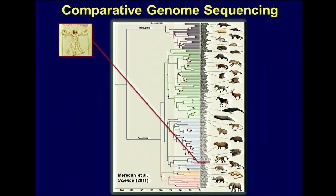A prominent genome researcher, Eric Lander, made the comment that for the past three and a half billion years, evolution has been taking notes — and all those notes were scripted in the genome sequences of other species. The idea came to the fore that we could understand the human genome sequence better if we could compare it to other genomes and figure out what has and has not changed. Humans are just a small twig on this complicated phylogenetic tree of vertebrates.